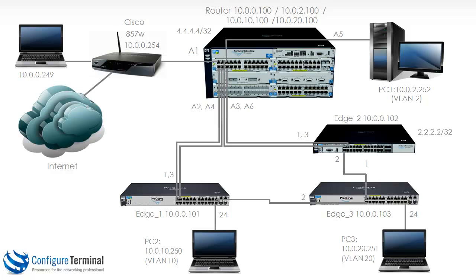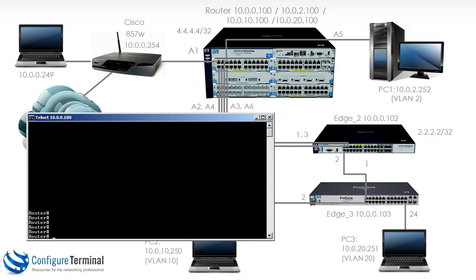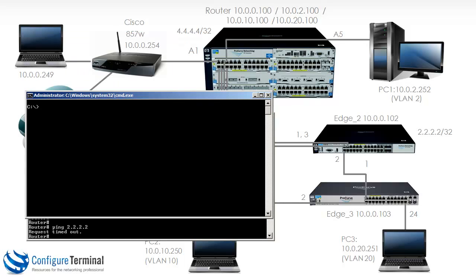To show some of the options available with static routing on HP E-Series switches, I'm going to create a loopback interface on edge 2 and give it an IP address of 2.2.2.2/32, and do the same on the router, giving it an IP address of 4.4.4.4/32. These two switches are layer 3 switches and can support routing protocols and static routes. On the router, pinging 2.2.2.2 doesn't work because that address doesn't exist yet. Telnetting to edge 2 and pinging 2.2.2.2 also doesn't work because that interface doesn't exist.